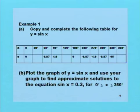Here's an example for you. Example 1, Part A. Copy and complete the following table for y equals sine x. In the first row, we have x. In the second row, we have y. Y equals sine x. So sine of 0 is 0. Sine of 30, we found that a moment ago. You can check it on your calculator and put in the value. Sine of 60 is 0.87, and so the other values are given.